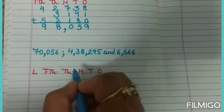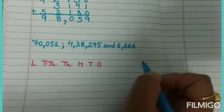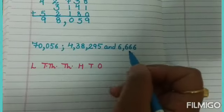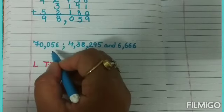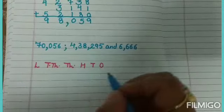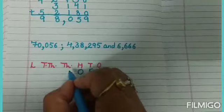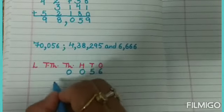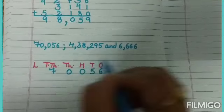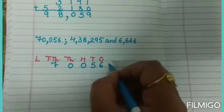Lakhs, ten thousand, thousand, hundred, tens, and ones. Next step: arrange the numerals from right to left. 6 ones, 5 tens, 0 hundreds, 5 thousands, 0 ten thousands, and 7 ten thousands.